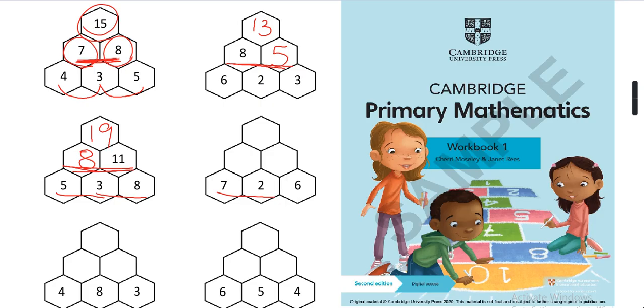7 plus 2 is 9, 2 plus 6 is 8, and 8 plus 9 is 17.